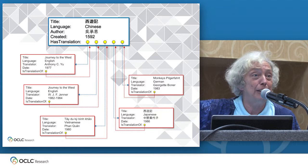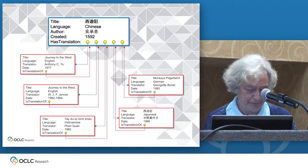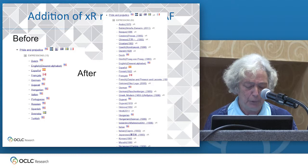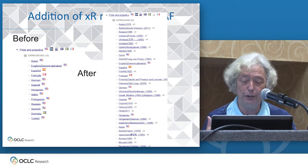Identifying the translator is so important. We have been data mining WorldCat to generate work translation or expression level records, including the translated title and translator with links to the original work and the author, and adding them to the virtual international authority file. These records are flagged as XR.